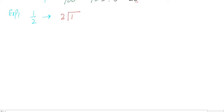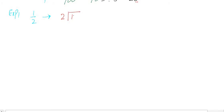We need a number which, when multiplied by 2, gives us 1. But 2 is already bigger than 1, so there is no whole number that works. When the numerator is smaller than the denominator, put a decimal point on top and add a zero, making it 10. Now 2 goes into 10 — 5 times 2 gives 10 — with 0 remainder. So the answer is 0.5.